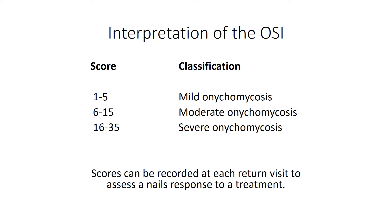A score of 6 to 15 points represents moderate onychomycosis, and 16 to 35 is severe onychomycosis. Each time the patient visits, you can record the scores for nails to give an objective measure of how the nail is improving visually at each appointment. It's important to know whether the infection is mild, moderate, or severe because generally speaking, the more severe the infection, the longer it takes to clear — whether using oral or topical antifungal agents. This helps you advise patients on whether it will be a short or long journey to cure.